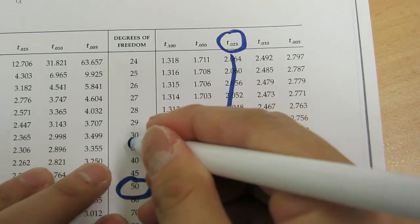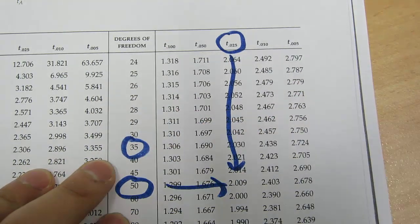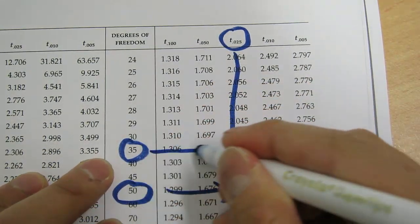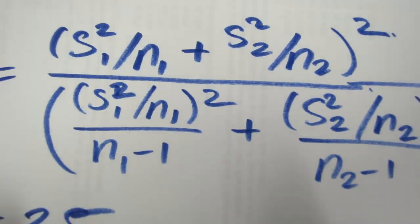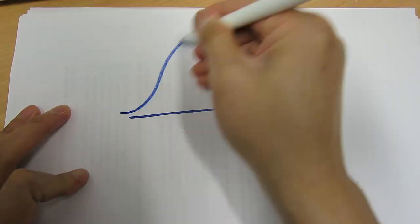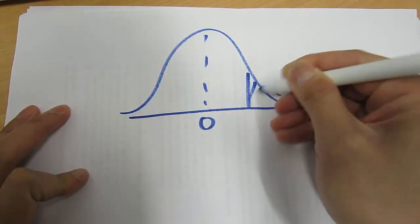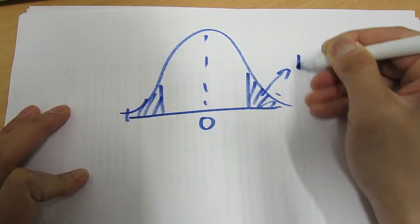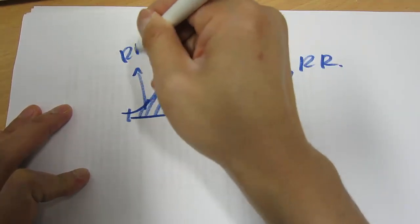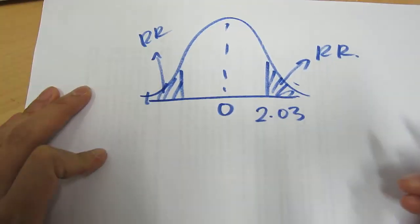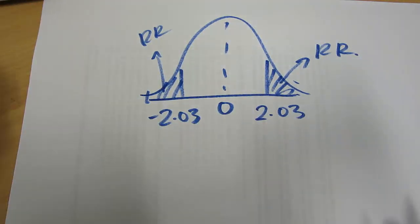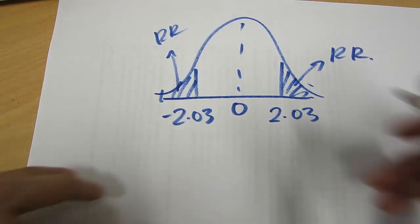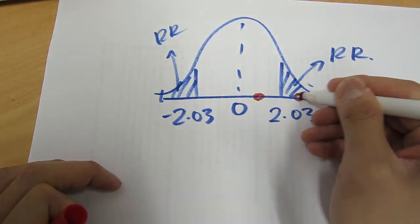Hypothetically, let's say you calculate the degrees of freedom and find it equals 35. We look it up in our student t distribution. Testing at the 5% significance level, we look up 2.5% and find the critical value is 2.030. We draw our distribution, mark the rejection regions at positive 2.03 and negative 2.03 because it's symmetrical, and then all we have to do is calculate our t-statistic. If it lies in the middle, we don't reject the null; if it lies in the tails, we reject the null.